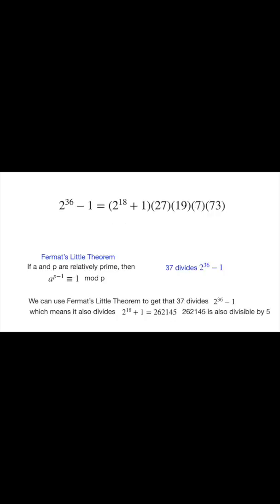Now we can use Fermat's little theorem. If A and P are relatively prime, then A to the P minus 1 is congruent to 1 mod P, meaning it leaves a remainder of 1 when dividing by P. So here, A is 37 and P is 2. So Fermat's little theorem gives us that 37 divides 2 to the 36 minus 1. By uniqueness of prime factorization, it doesn't divide 27 times 19 times 7 times 73.